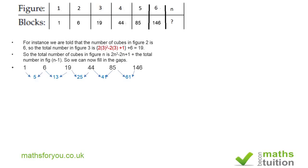For the second line of differences: 13 minus 5 equals 8, 25 minus 13 equals 12 — wait, let me recalculate — and continuing: these are not constant, so it could be cubic. For the third line of differences: the values give a constant difference of 4. Since the third line of difference is constant, this must be a cubic sequence.